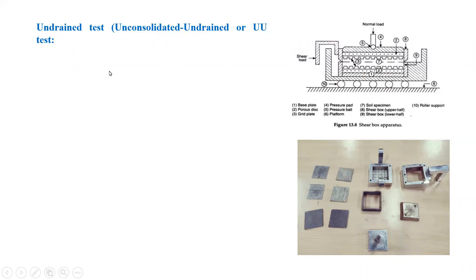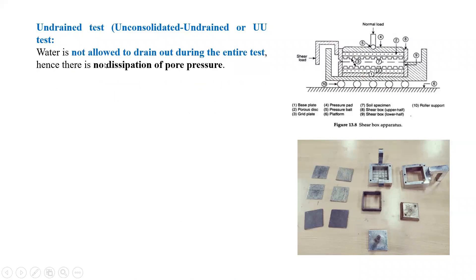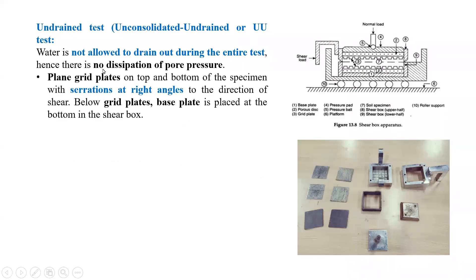Now, the various tests we can perform in the direct shear test: the first is the undrained test, also called the unconsolidated undrained test. In this test, water is not allowed to drain out during the entire test, hence there is no dissipation of pore pressures. We do not use porous plates — instead, plain grid plates are placed on the top and bottom of the specimen, with serrations at right angles to the direction of shear.